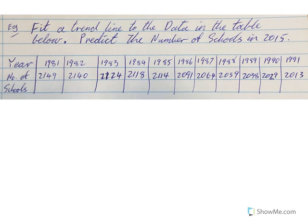Here's an example: fit a trend line to the data in the table below and predict the number of schools in 2015. We need to fit a trend line using the least squares method — you do that on the calculator. On the website there's an actual walkthrough of how you do this, and there's a YouTube video there for example one.